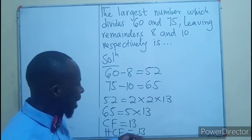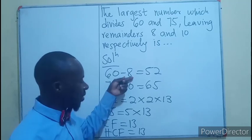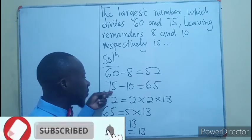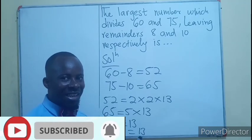13 is the number that divides 60 leaving a remainder of 8, and the same 13 divides 75 leaving a remainder of 10. Thank you for watching, like and share, bye.